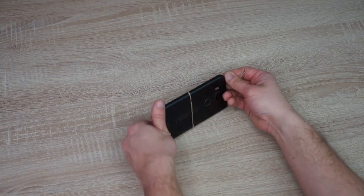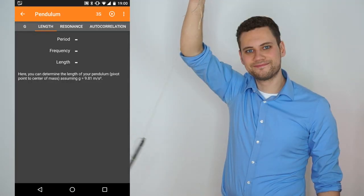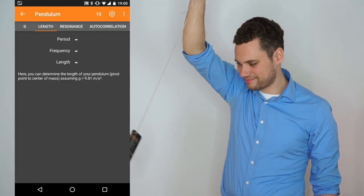Attach a string to your phone. Press start and let your pendulum swing long enough to exceed the 3 plus 10 seconds. Then have a look at the result.